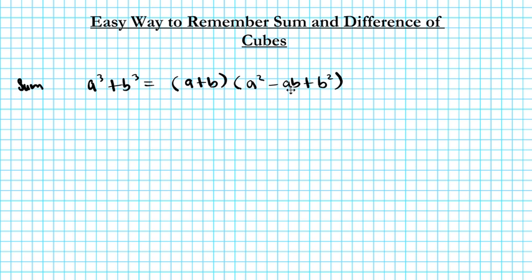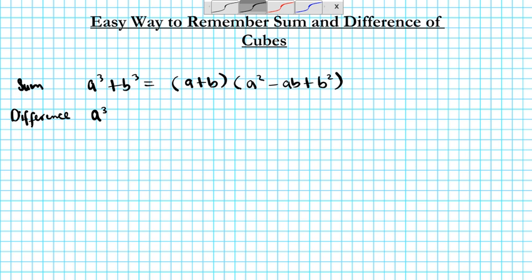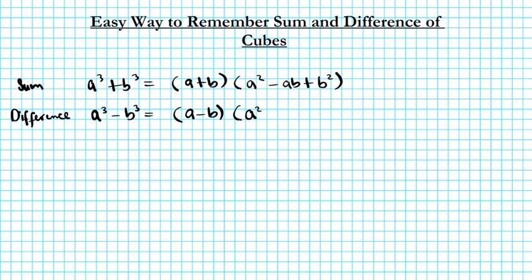For the difference of cubes, you have a³ minus b³, and the factored form is (a − b) times: square the first term, plus the product of the first and the last, plus the square of the last.